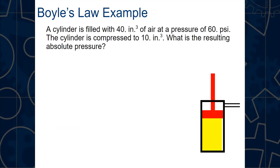A cylinder is filled with 40 cubic inches of air at a pressure of 60 psi. The cylinder is then compressed to 10 cubic inches. What is the resulting absolute pressure? The volume decreased — we compressed it down to 10 cubic inches. Since the pressure given is gauge pressure, not absolute, we need to convert it first.